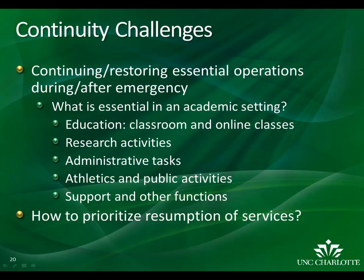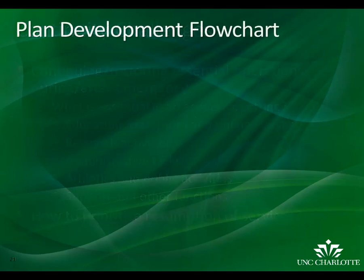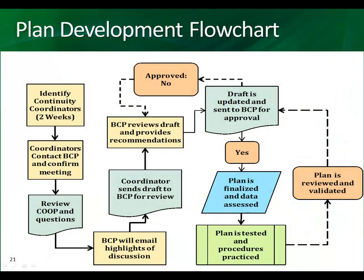There are several challenges to continuity operations after a disruption. Here at UNC Charlotte, we need to account for education, research, administrative, athletics, and support functions, and we need to prioritize the resumption of services. We do all this through the COOP. When developing a COOP plan for business units, the process is a series of face-to-face meetings with the Office of Business Continuity Planning. We begin by identifying the continuity coordinators whose responsibility will be completing the plan and acting as a point of contact. We have an introductory meeting in which the COOP is explained and then a rough draft is done. The Office of Business Continuity Planning analyzes the rough draft and a review meeting is scheduled. If necessary, a third meeting is set to answer any remaining questions. The plan is then signed for approval and is tested to validate it.